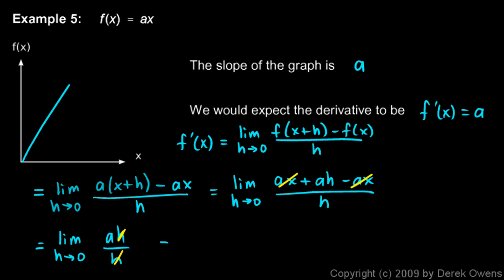Those h's cancel, and we just have the limit as h approaches 0 of a. And obviously, as h gets close to 0, as h gets close to anything, a is simply a. So that's our answer, which is what we would expect.